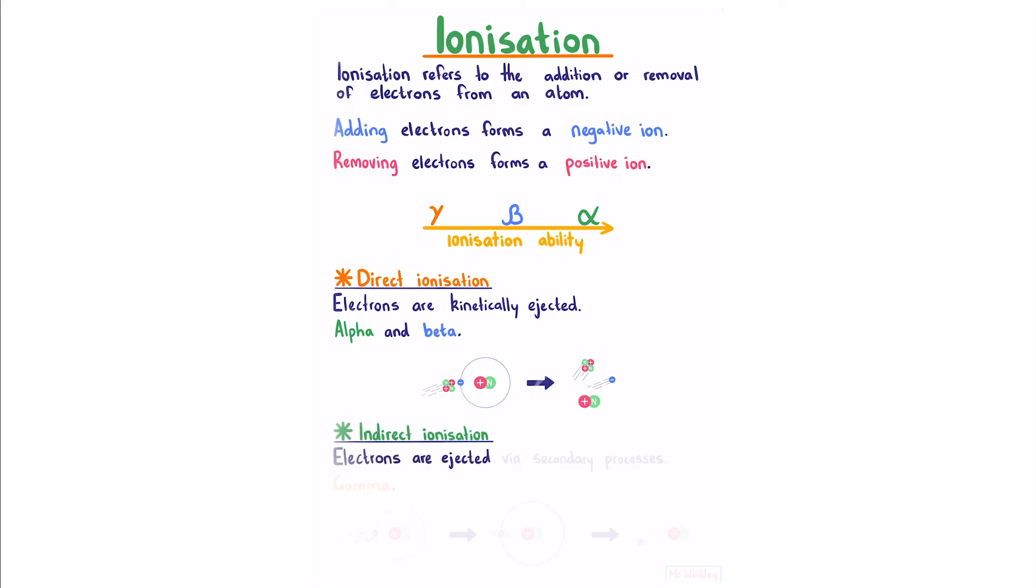We also have indirect ionization, where electrons are ejected via secondary processes. This method is used by gamma. So we can imagine a gamma ray incident upon an atom, exciting an electron, providing it enough energy to escape the atom. And while these two pictures might seem very similar, in terms of the physics, they're very different.